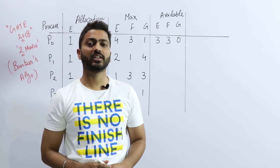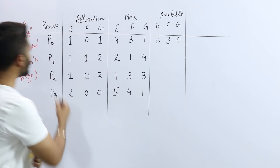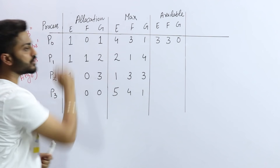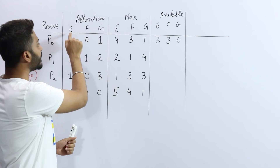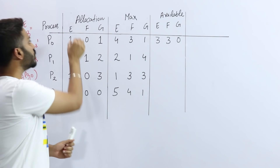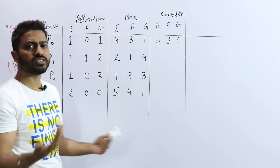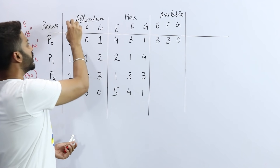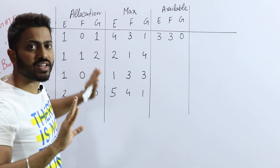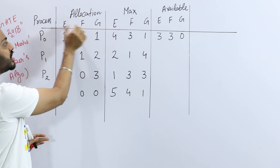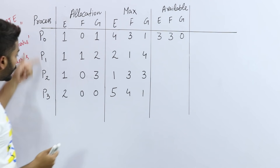This question is from GATE 2018 for 2 marks. It is on the Banker's Algorithm, in which we have 4 processes and 3 types of resources: E, F, and G. You can think of E as a printer, F as a CPU, and G as a register. We are not focusing on the type of resource — these are just the names given. So there are 3 resource types E, F, G and 4 processes.